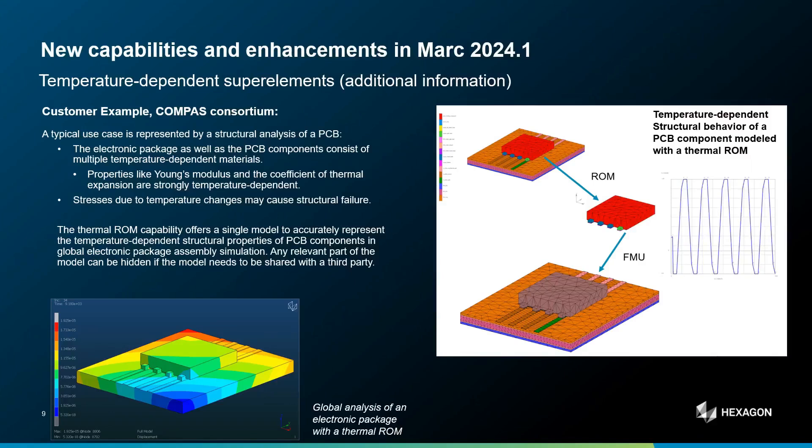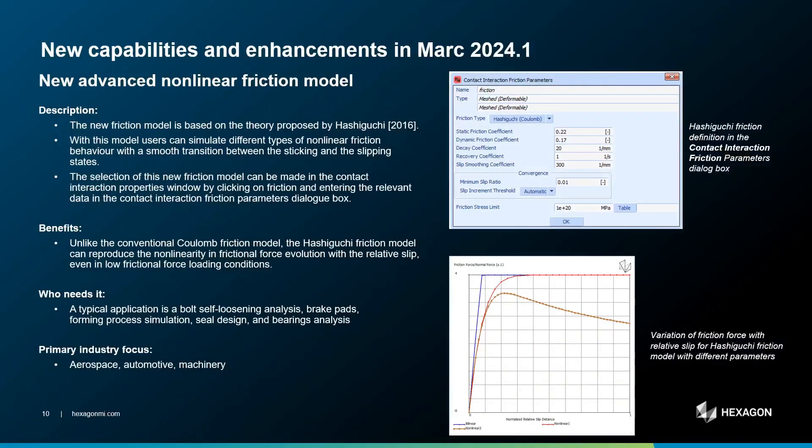Any relevant part of the model can be hidden if the model needs to be shared with a third party, as usual when dealing with super elements. The third topic I would like to discuss is about a new model that has been introduced for nonlinear friction. With this new capability, engineers will be able to model more complex nonlinear friction behaviors with a smooth transition between the sticking and the slipping states. As you can see in the graph below — please see the curves in orange and red — typical applications are bolt self-loosening analyses, brake pad analyses, forming process simulations, seal design, or bearing analyses.